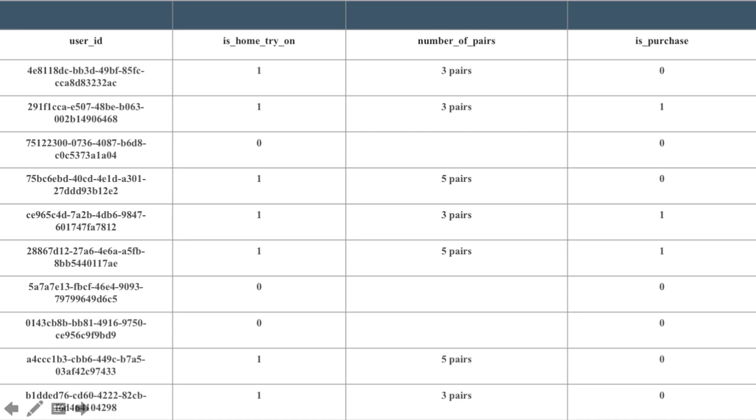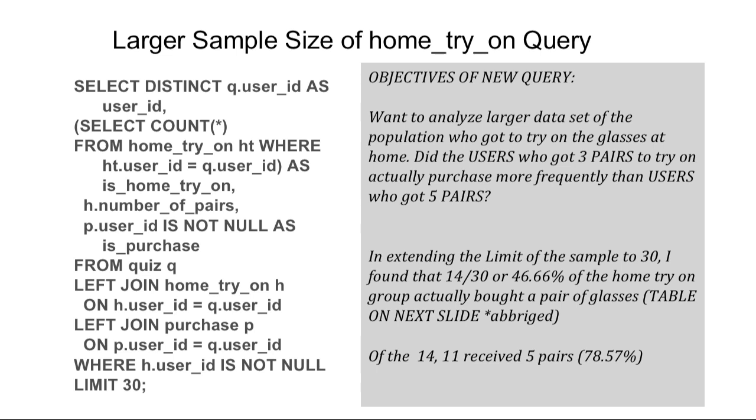We have some three pair purchases and five pair purchases, so I wanted to make a larger sample size query and really just extend that limit out to 30, and I ultimately found that 14 out of 30 home try-on individuals actually purchased a pair of glasses, or 46 percent, and of the 14 who purchased glasses, 11 of them received five pairs for the home try-on. So it does look like five pairs is the way to go for the home try-on.